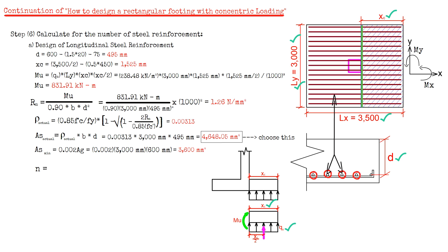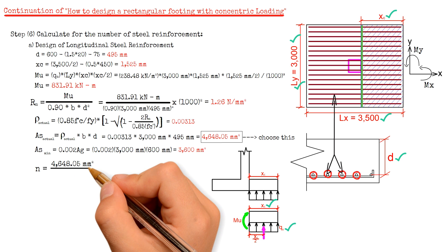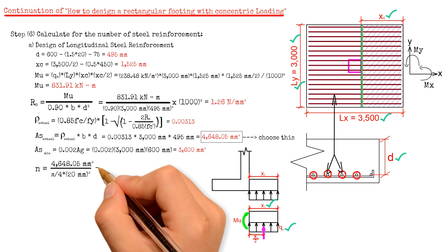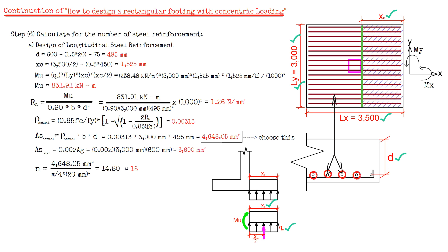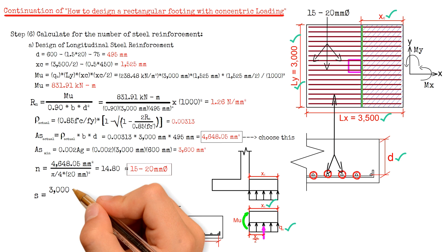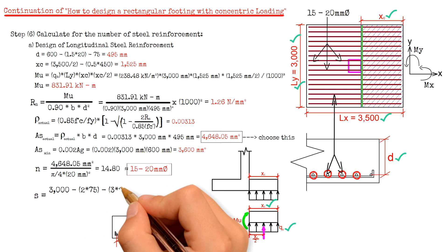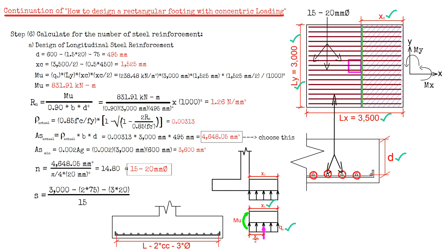To calculate for the number of longitudinal steel reinforcement, we divide 4,648.05 square millimeters by the area of one bar: pi over 4 times the square of the diameter 20 mm. The result is 14.8, rounded up to 15. The final number of longitudinal steel reinforcement is 15 pieces of 20 mm diameter. The spacing is calculated as 3000 mm minus 2 times the clear cover 75 mm, minus 3 times the diameter 20 mm, divided by 15, giving 186 mm. You may choose to decrease the spacing to 180 mm.